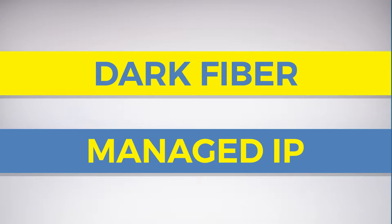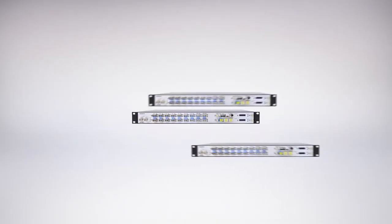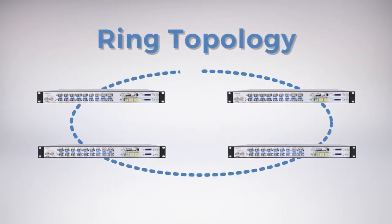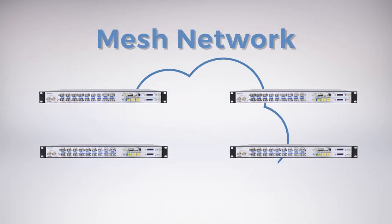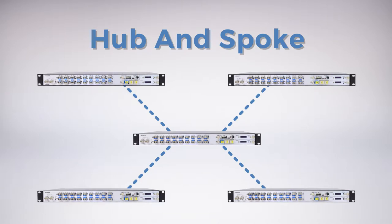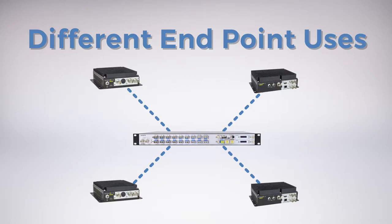These typical managed networks operate on 10G, 25G, 40G and 100G connectivity options, which the Scorpion also supports. The different topologies that the Scorpion can be installed into are point-to-point, ring architecture, mesh, and hub-and-spoke architectures. The Scorpion can not only serve as its own centralized location, but it can also have different endpoint uses as well.